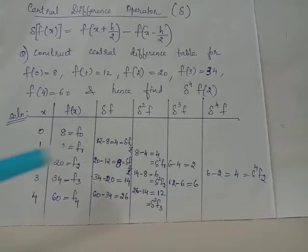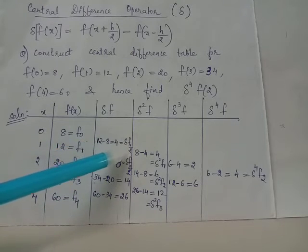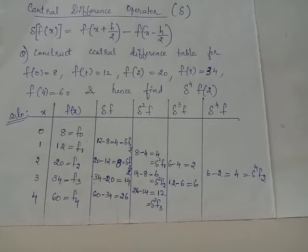We have notations for these values given by delta f suffix 1 by 2, delta f suffix 3 by 2, delta f suffix 5 by 2, and delta f suffix 7 by 2.